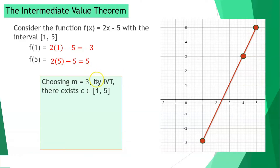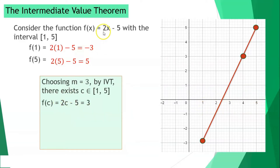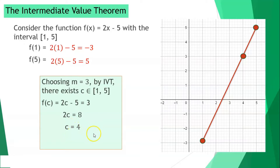Choosing m as 3, or y as 3. By the intermediate value theorem, there should be a value of c which is between 1 and 5. So let's solve. We have 2c minus 5 is equal to 3, which is our identified value for y.